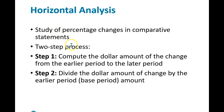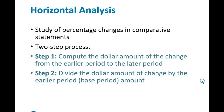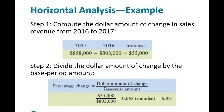The first way we'll take it apart is doing a horizontal analysis — looking at percentage changes in comparative statements. The key part to remember is that you have to calculate a percentage change, and you want to use the earlier period as your base. You see what the difference is, take that difference and divide it by the base, and that tells you your percentage change. For example, sales were $858,000 in 2017 and $803,000 in 2016, so the increase is $55,000. We take $55,000 divided by $803,000 and get a 6.8% increase. The key thing to remember is that you divide by the base year — the earliest year.